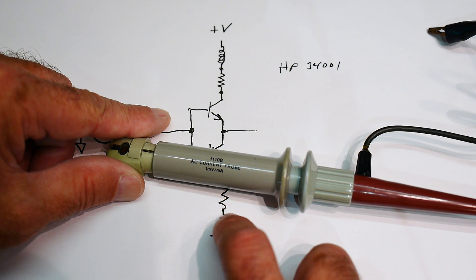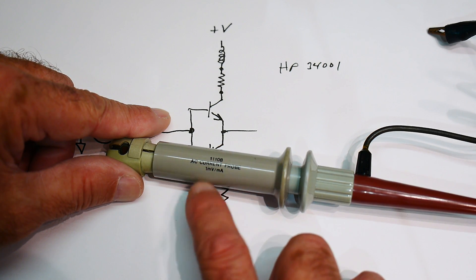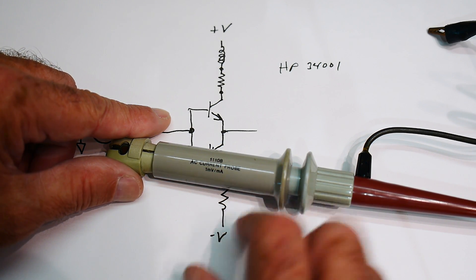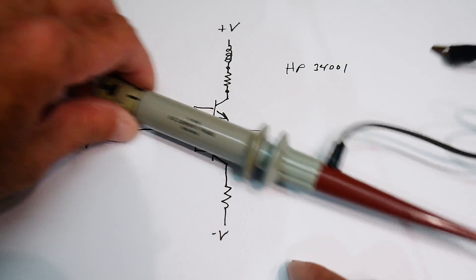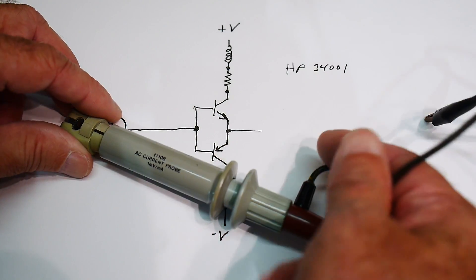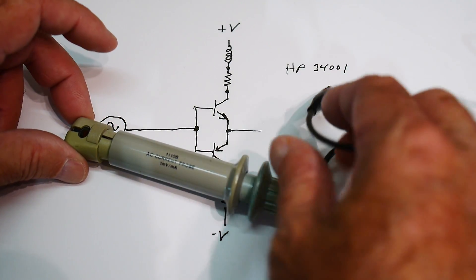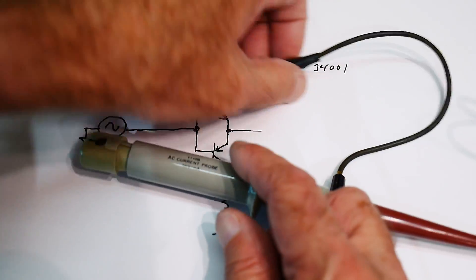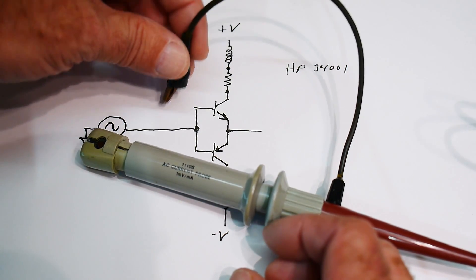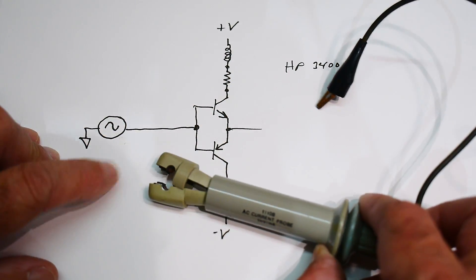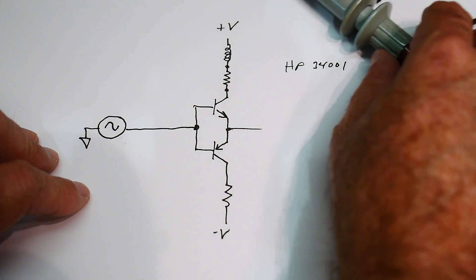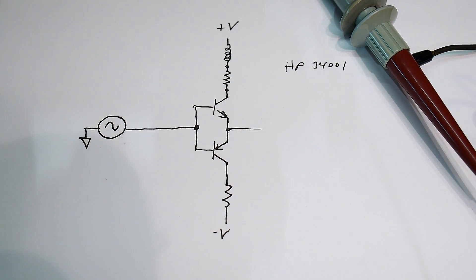And it says right on it one millivolt per milliamp. So if you had one milliamp of current you have one millivolt of voltage. So let's try this thing out. It's an oldie but a goodie. It does have a ground on it, not really necessary usually, but you can put that on ground just to keep things quiet I guess. And then you can use this clip-on ammeter. So let's set something up and measure it.